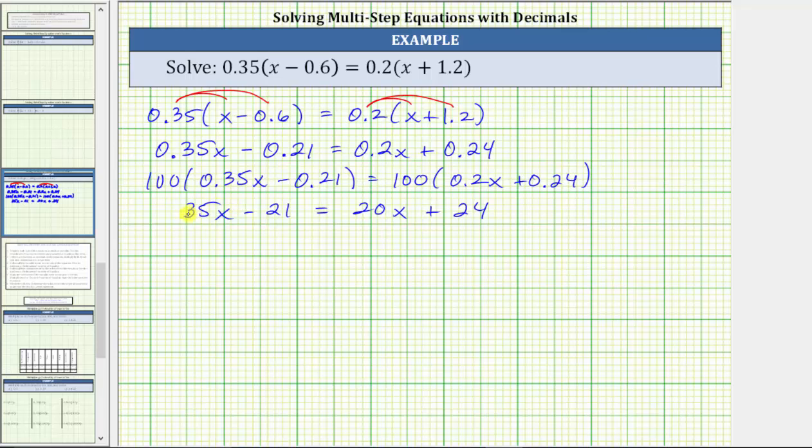We have 35x on the left and 20x on the right. Let's collect the variable terms on the left side so the coefficient remains positive. So moving to the right side, we need to add or subtract to undo positive 20x. The next step is subtract 20x on both sides of the equation.